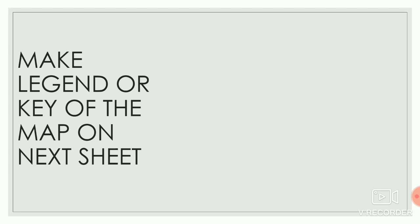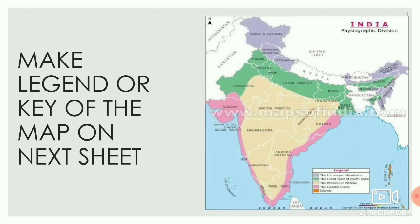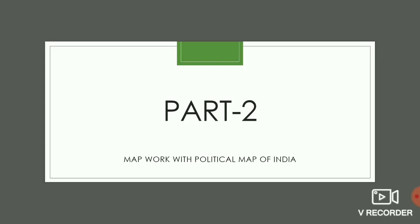Next, make the legend or key of the map on the next sheet. Your final output will look like this. So this was Part 1.